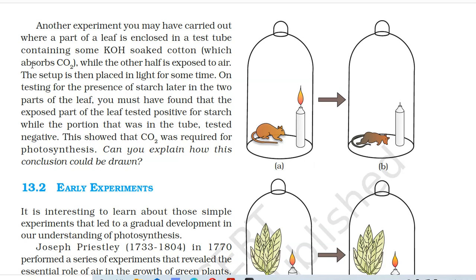Another experiment you may have carried out is where a part of a leaf is enclosed in a test tube containing some KOH-soaked cotton which absorbs CO2, while the other half is exposed to it. The setup is then placed in light for some time. On testing for the presence of starch later in the two parts of the leaf, you must have found that the exposed part tested positive for starch while the portion in the tube tested negative. This showed that carbon dioxide was required for photosynthesis. Can you explain how this conclusion could be drawn?